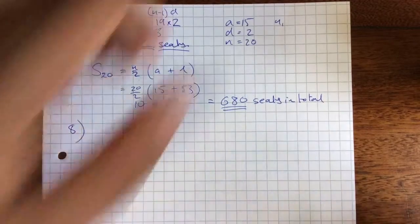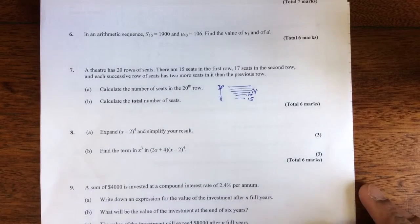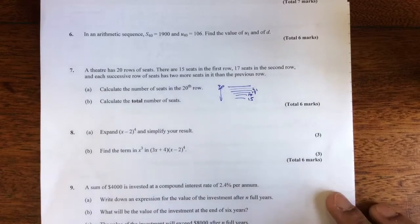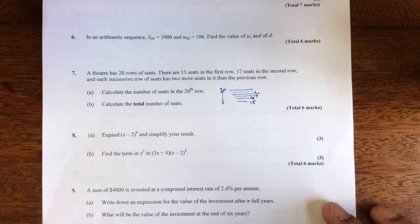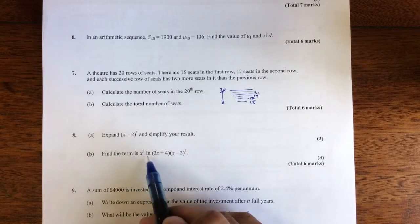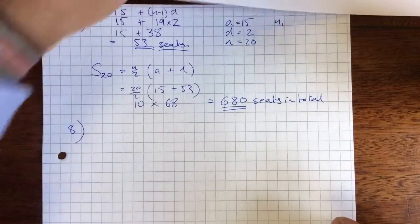So question 8, what have we got? Ah, binomial. Expand (x minus 2) to the power of 4 and simplify your result. Find the term in x cubed, I like that, and then something a bit more meaty and complicated.